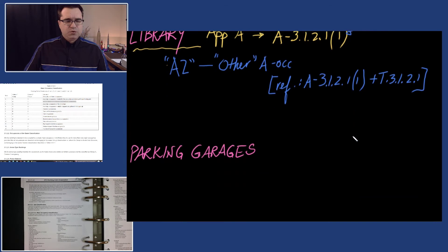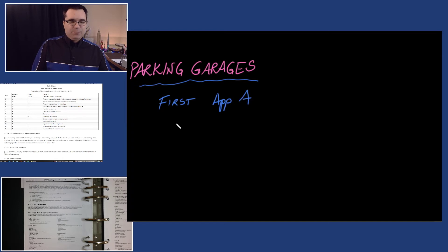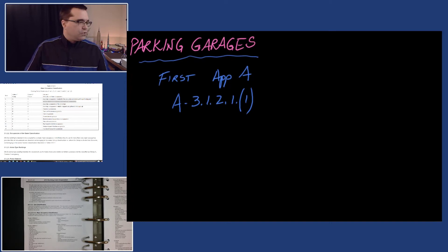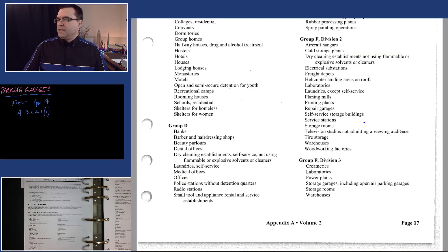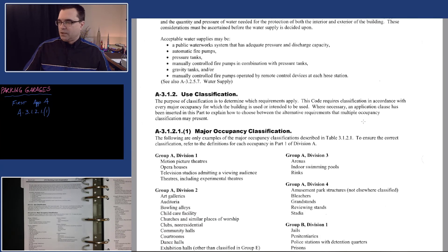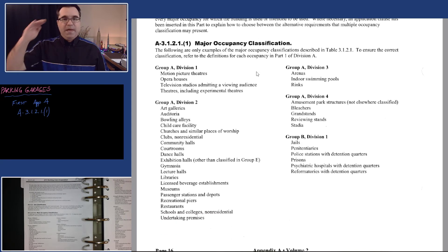Let's do one more — parking garages. This will be our last example. We're going to use what we've learned and start with Appendix A 3.1.2.1.1. I'll make this large on screen, remove any extra markings, and go back to the beginning. We're looking for parking garages — start from A1 to F3, no cheating.